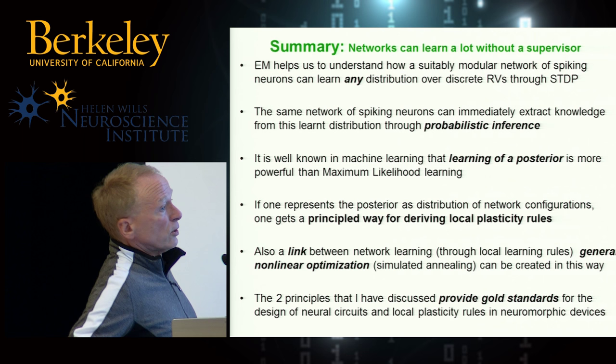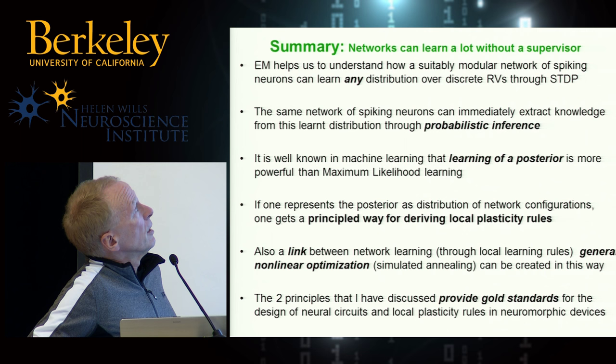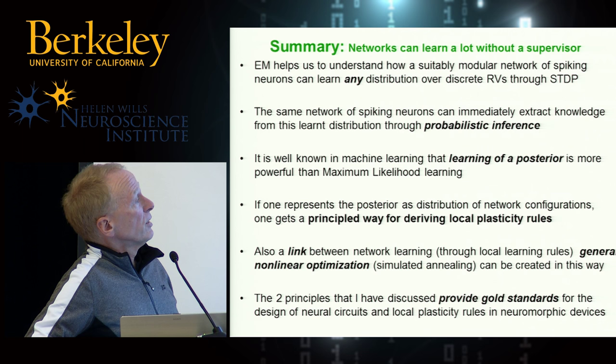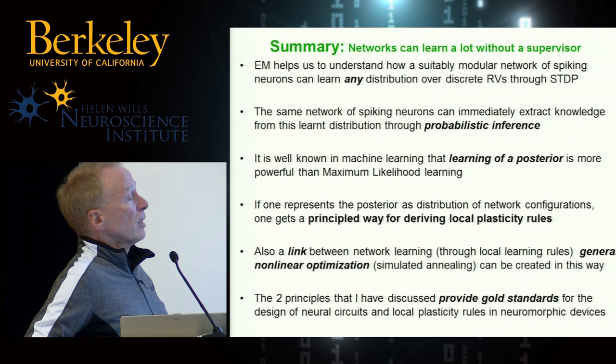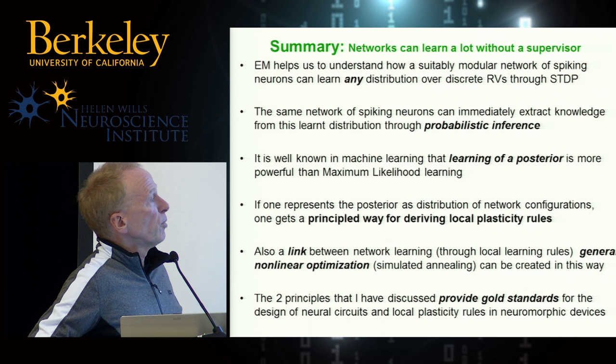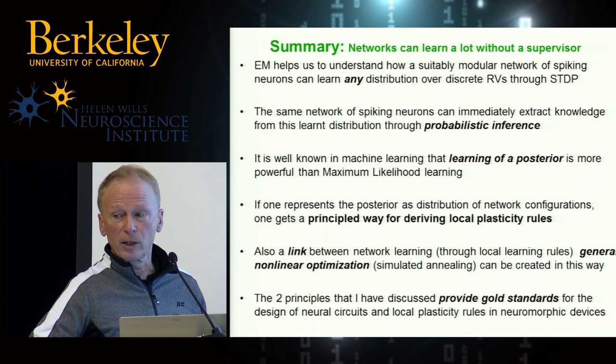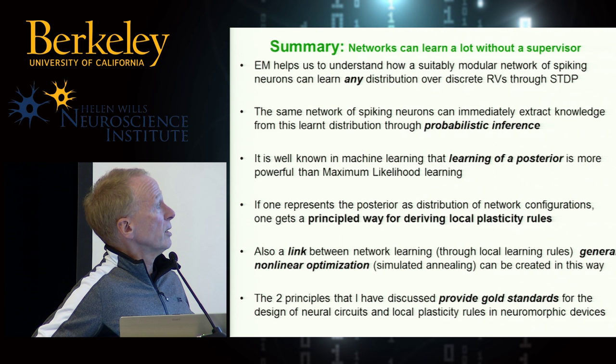In summary, I've discussed two principles with somewhat different pros and cons. The simpler one, EM, requires particular network modules and learning rules, but recruits the power of EM. The second approach, based on Fokker-Planck and synaptic sampling, is much more general — we're just starting to work on this and there are many more issues to explore. Both provide gold standards: the second gives you a way to judge the quality of local learning rules by how well they approximate this partial derivative from p*, and forces you to reflect on what your ideal distribution of parameter vectors actually is.